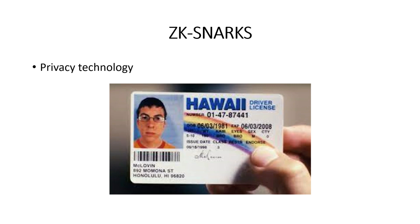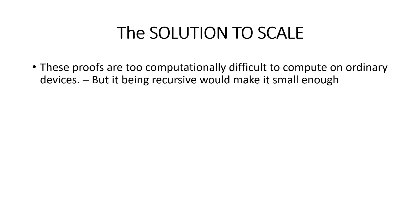Another example: say I want to prove I'm of age to drink, but I don't want to disclose who I am — zk-SNARKs would be ideal in this scenario. In theory this is really great, and I think the world would be better with this type of technology. However, currently zk-SNARKs are too computationally difficult to compute on ordinary devices, meaning recursion is necessary for it to be massively adopted.